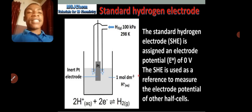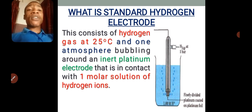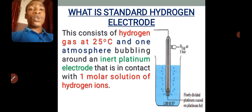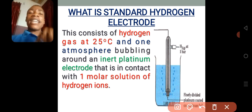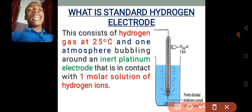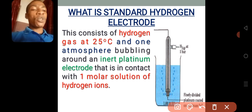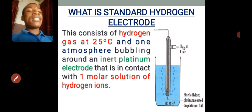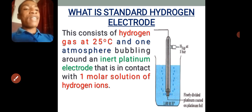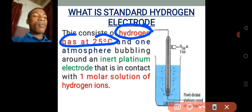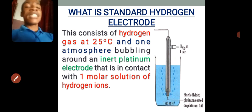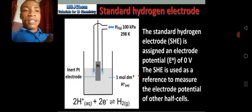In your exam you may be asked to describe a standard hydrogen electrode — this is a four-mark question. You should say that the hydrogen electrode consists of hydrogen gas at 25 degrees Celsius. There is a glass tube containing hydrogen gas, and the hydrogen gas is maintained at 25 degrees Celsius — that is 298 Kelvin.